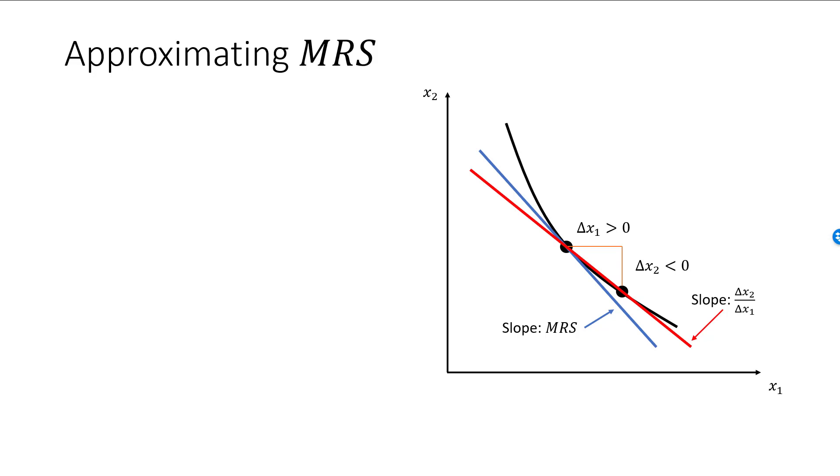Now here's the main point. As long as my second bundle is fairly close to the first bundle, and as long as my indifference curve is fairly smooth, the slope of the red line will be approximately equal to the slope of the blue line. Therefore, MRS will be approximately equal to delta x2 over delta x1. This is very important, and it will provide us with an interpretation of MRS.